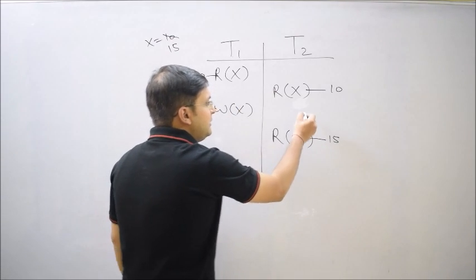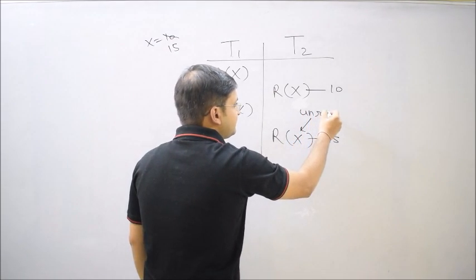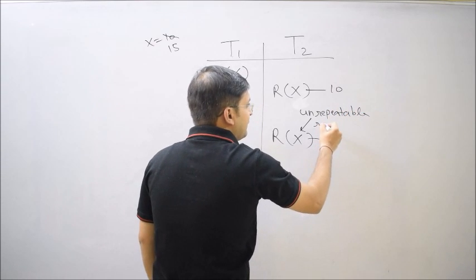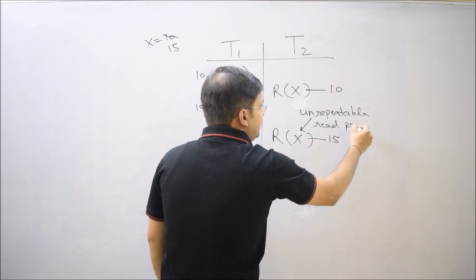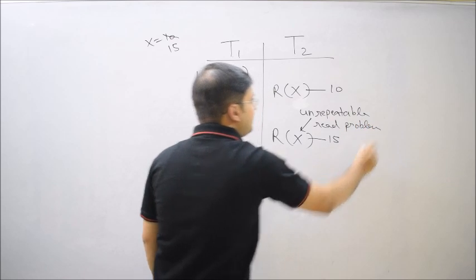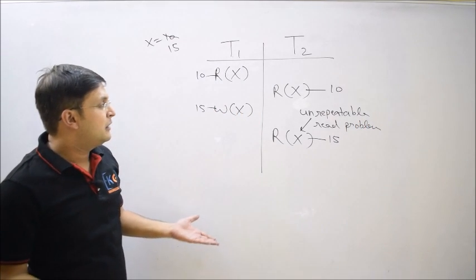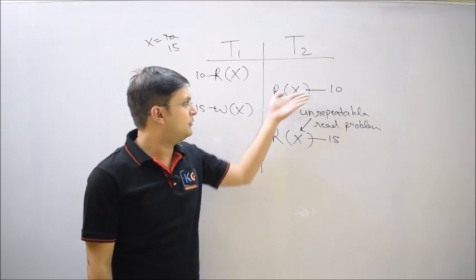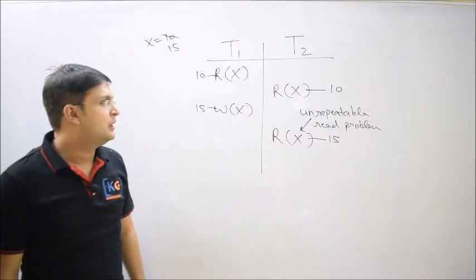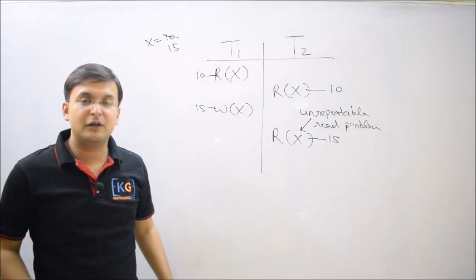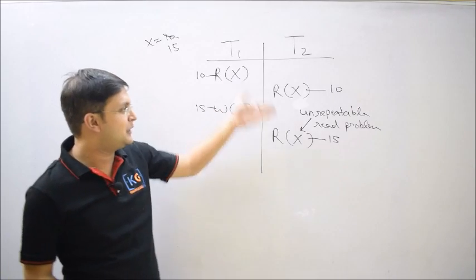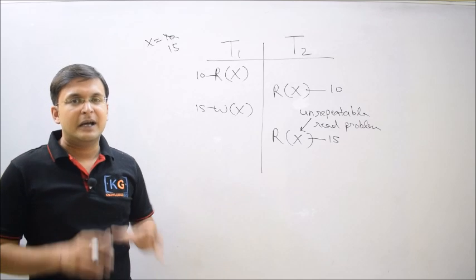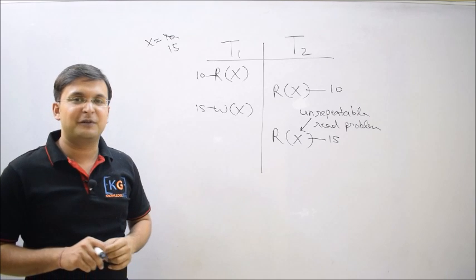This is called the unrepeatable read problem. It is a very popular scenario. It is called unrepeatable read because I myself cannot repeat my read operation — just a moment before the value was 10, and now it has changed to 15. This is a clear-cut case of inconsistency, and that is the unrepeatable read problem.